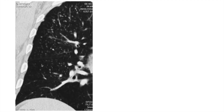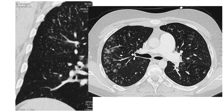Here we can see multiple nodular opacities especially in the upper lungs. This is pneumoconiosis, where the nodules are sharply demarcated. In contrast, diffusely demarcated nodules are seen in mycoplasma pneumonia, where the nodules have less sharp borders.